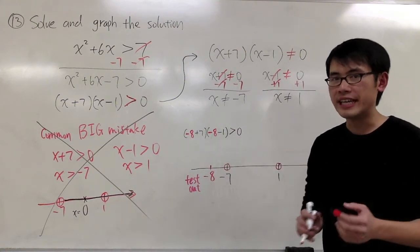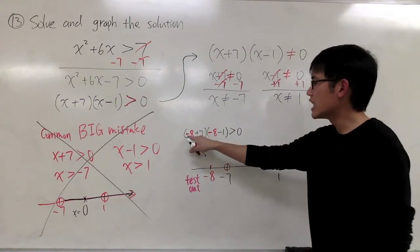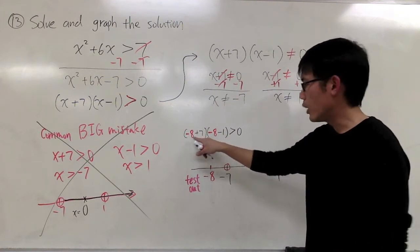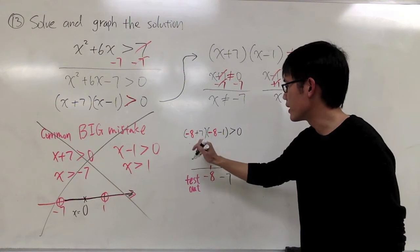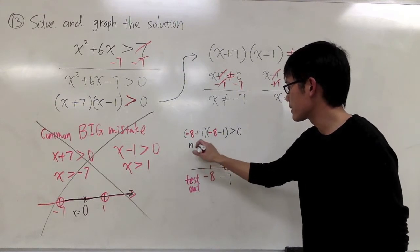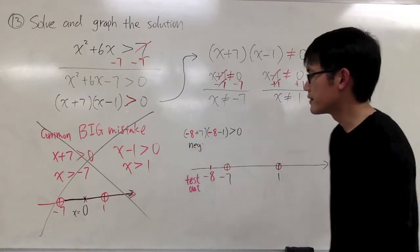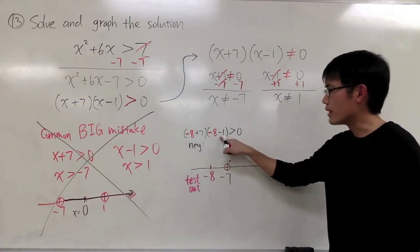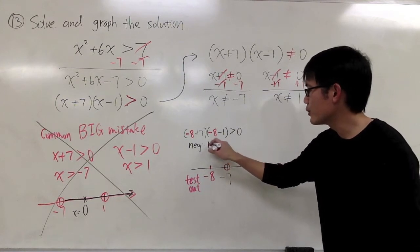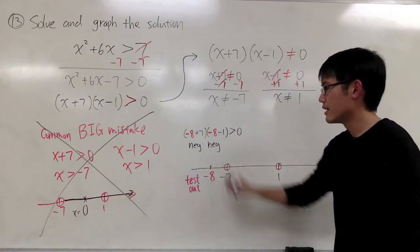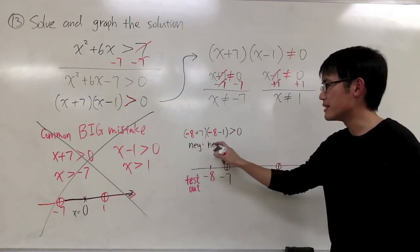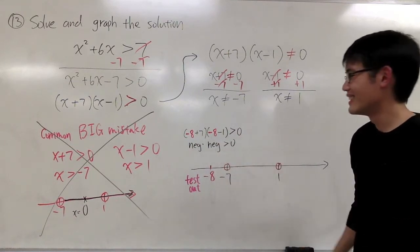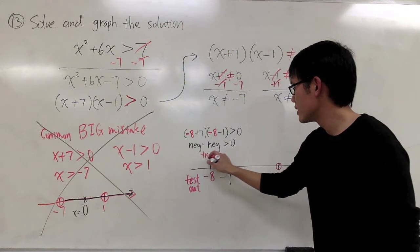Negative 8 plus 7 is negative 1. But all we care about is negative right here. And negative 8 minus 1 is negative 9, but that's also negative. When you multiply negative times negative, do we get positive? And the answer to that is yes. This is true because negative times negative is positive, which is greater than zero.